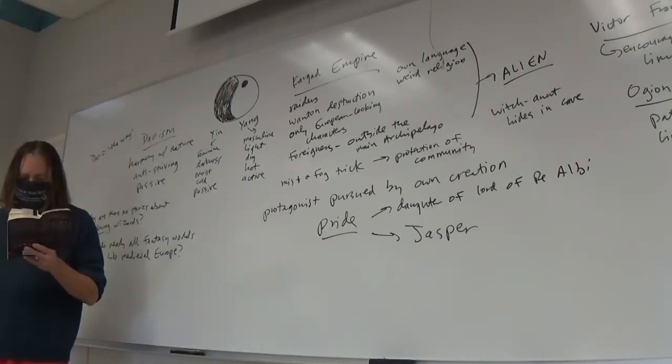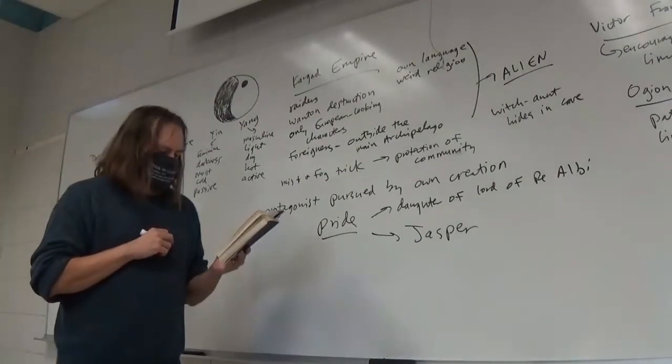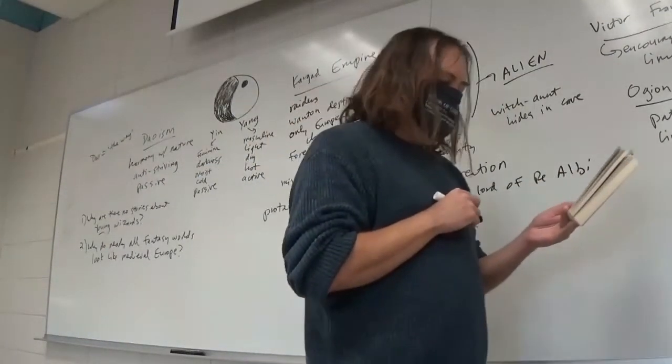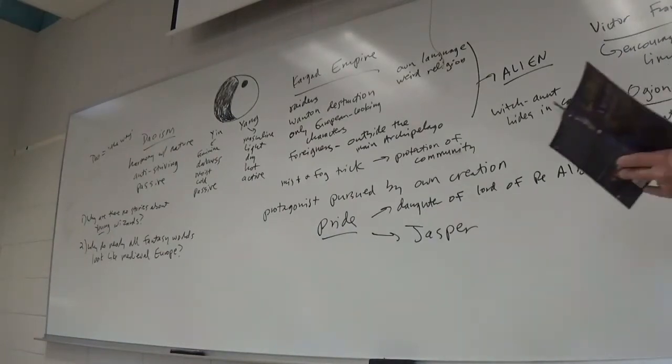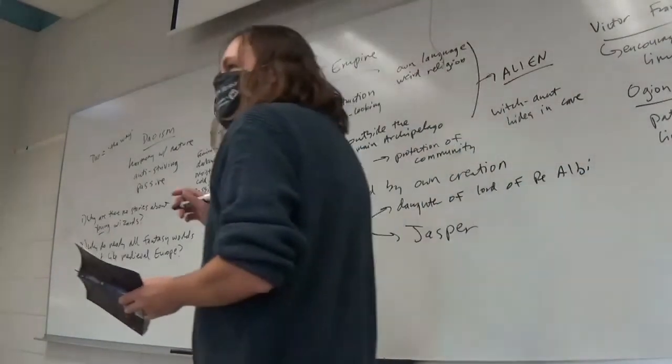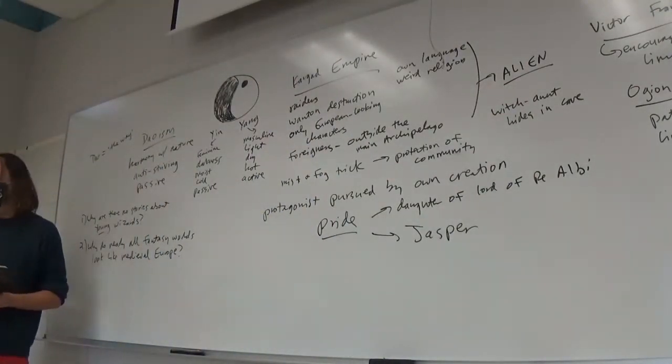Now, the witch of ten alders was no black sorceress, nor did she ever meddle with the high arts or traffic with old powers. But being an ignorant woman among ignorant folk, she often used her crafts to foolish and dubious ends. She knew nothing of the balance in the pattern, which the true wizard knows and serves, and which keeps him from using his spells unless real need demands. She had a spell for every circumstance and was forever weaving charms. Much of her lore was mere rubbish and humbug, nor did she know the true spells from the false. She knew many curses, and was better at causing sickness, perhaps, than at curing it. Like any village witch, she could brew up a love potion, but there were other, uglier brews she made to serve men's jealousy and hate. Such practices, however, she kept from her young apprentice, and as far as she was able, she taught him honest craft.